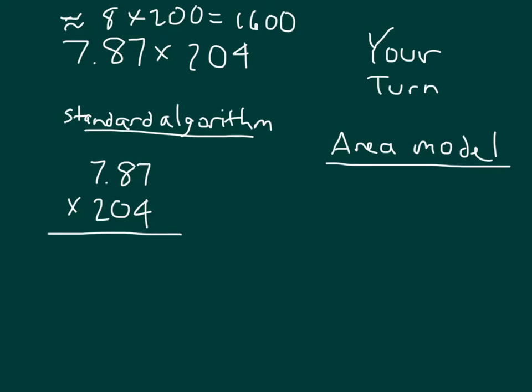And so for the standard algorithm, 4 times 7 is 28. 8, regroup a 2. 4 times 8 is 32. Plus 2 is 34. 4, regroup a 3. 4 times 7 is 28. Plus 3 is 31. I have that first partial product.